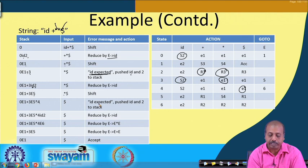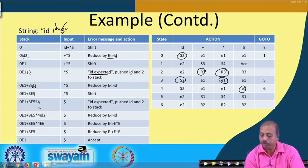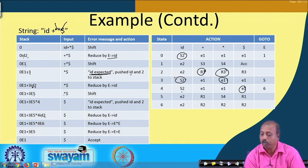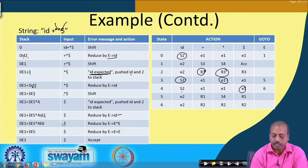It is 'id expected' again. So it pushes an id into the stack. If state 4 gets an id the action is shift 2, so id and state 2 are pushed. Now state 2 with dollar is reduced by rule number 3, giving the rule E producing id, and the configuration is updated.